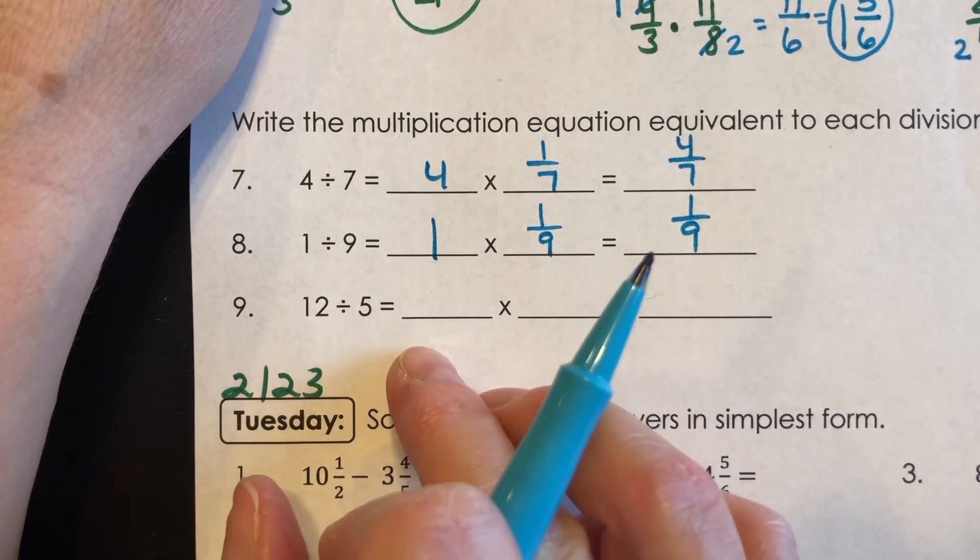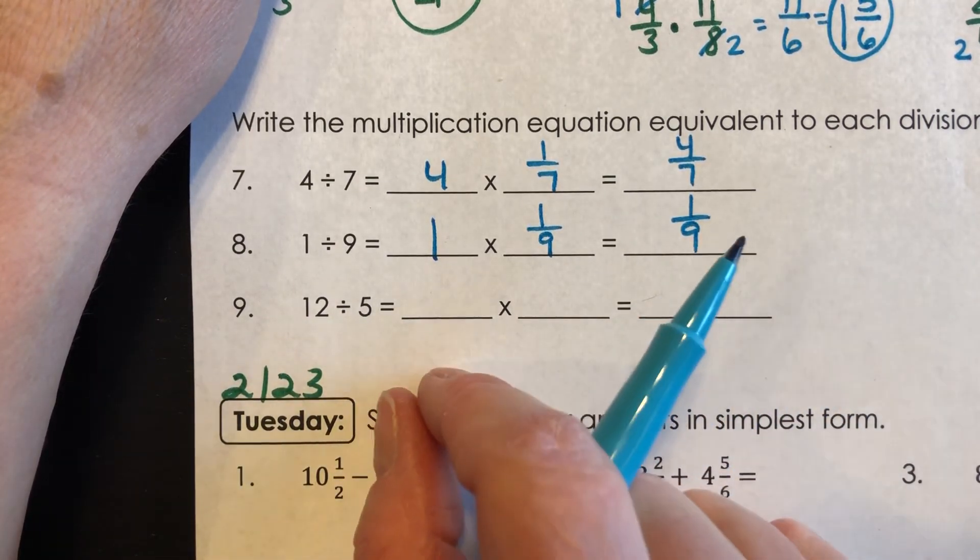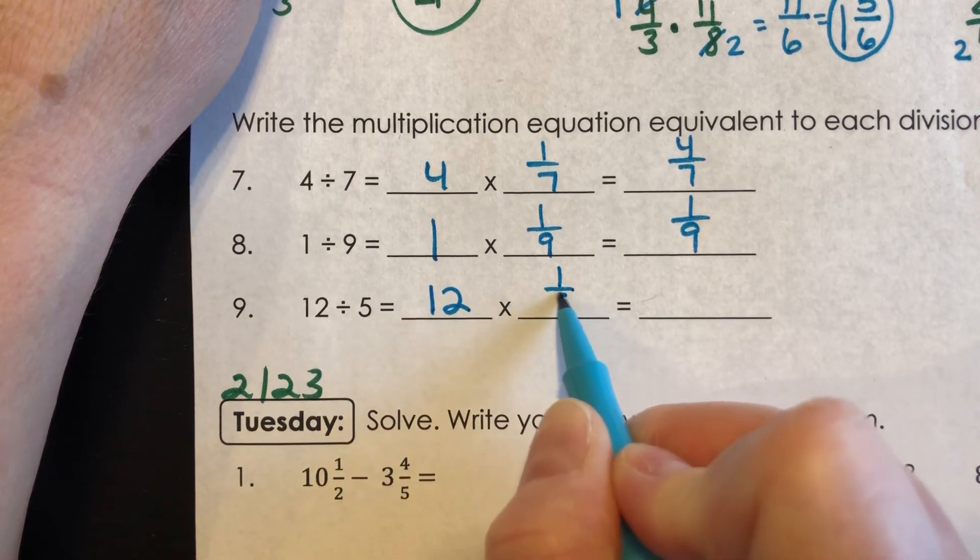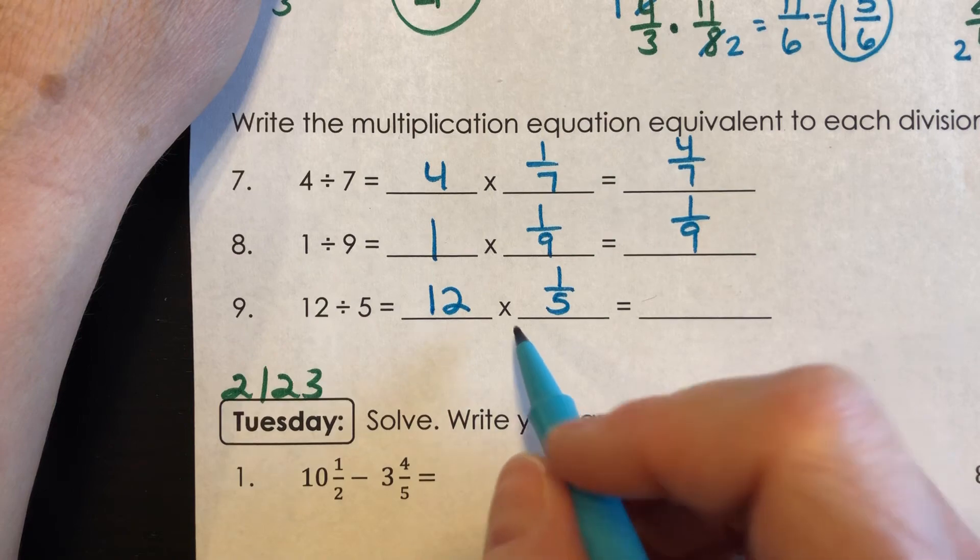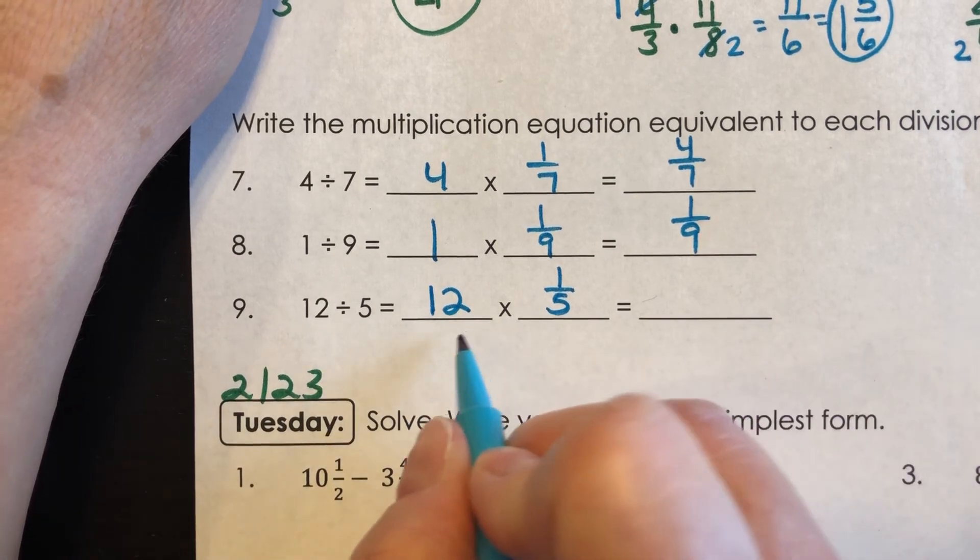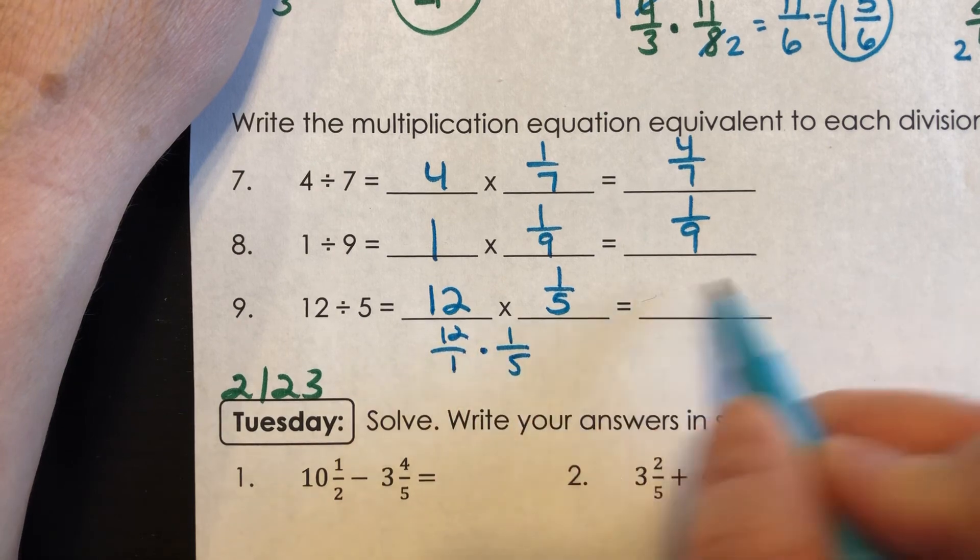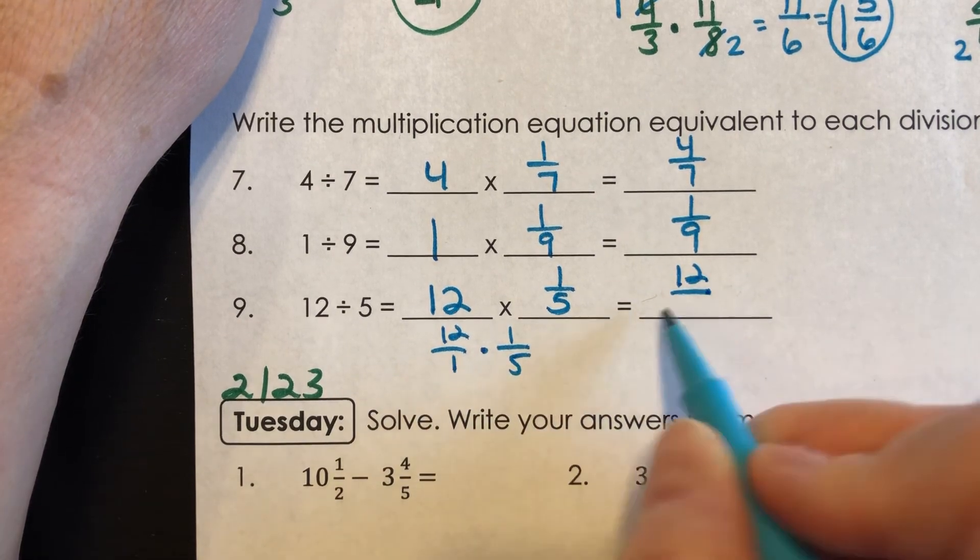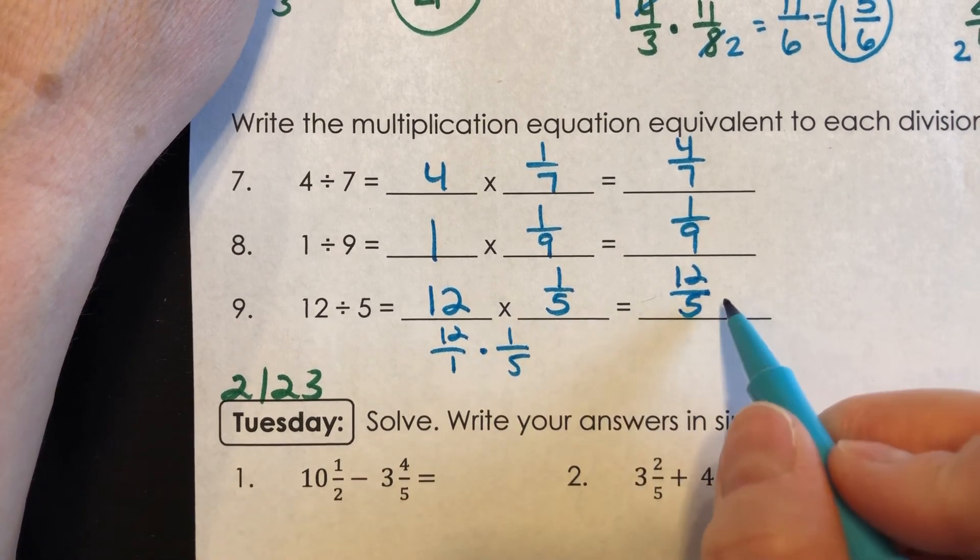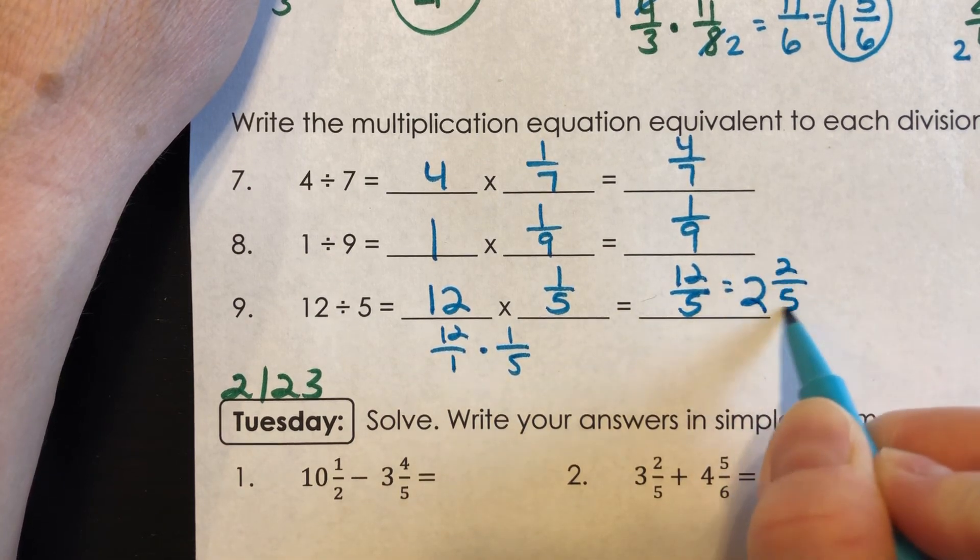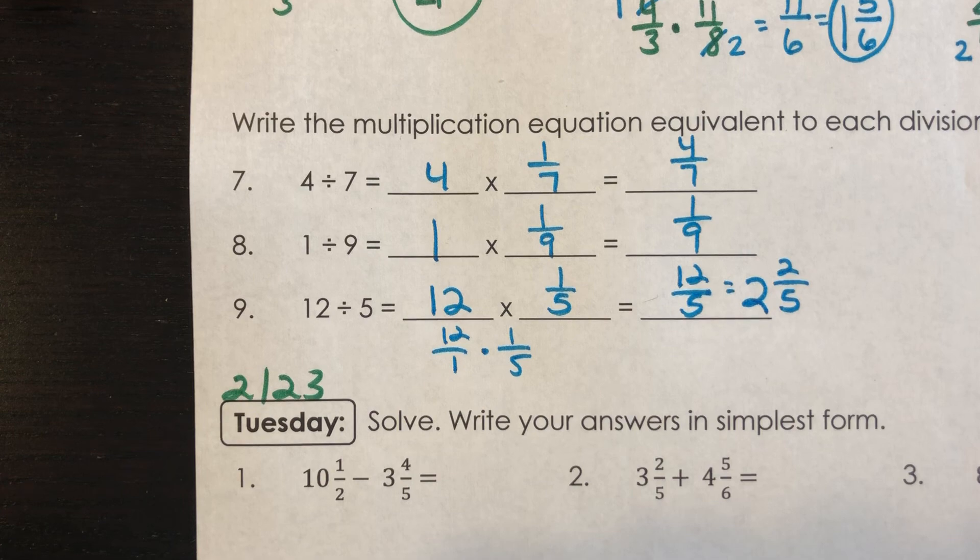Okay. Twelve divided by five. So if I'm taking twelve and dividing each of those twelve by five, that's the same as saying twelve times one-fifth. And if you have twelve times one-fifth, you might want to look at this like the twelve over the one times one over five. And twelve times one is twelve. And one times five is five. And this can be simplified. Five goes into twelve two times with two left over out of five.